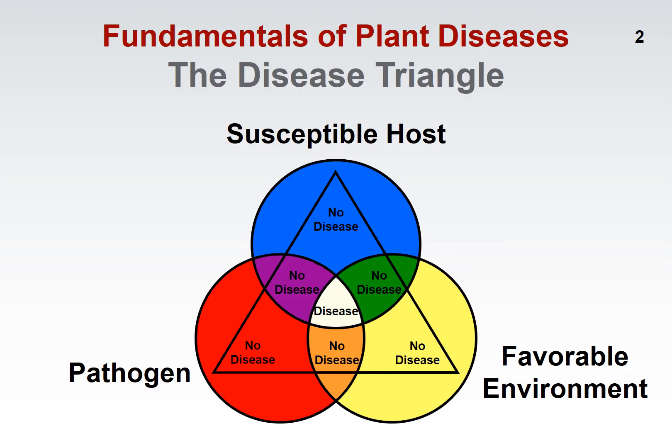Let's look at the susceptible host corner. What might we do to reduce the importance of this corner of the disease triangle? One of the things we can do is use what are called resistant varieties — you've probably heard of these, particularly if you're a vegetable or fruit grower. You can buy varieties that have been bred for resistance; they're less likely to get severe levels of disease. Scientists have found variability across plant populations, and some variants are less likely to get disease than others. They interbreed these and come up with named varieties that can be sold as having disease resistance.